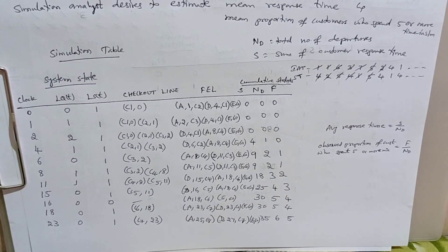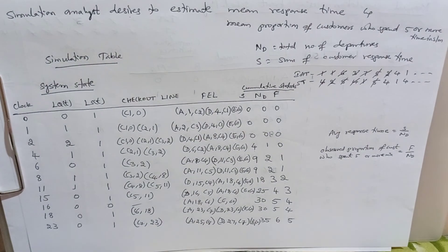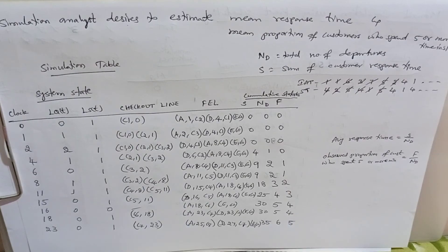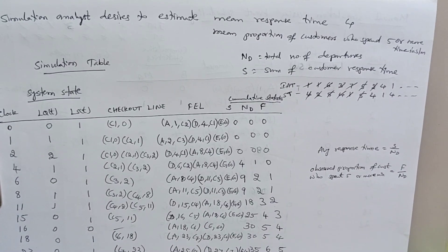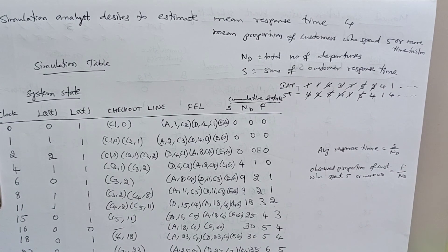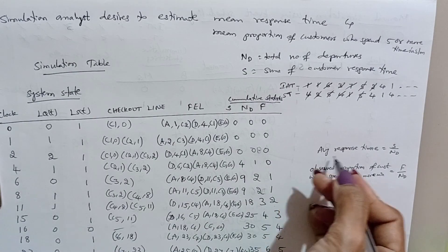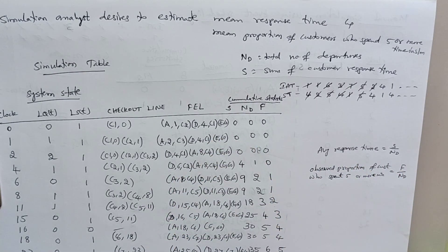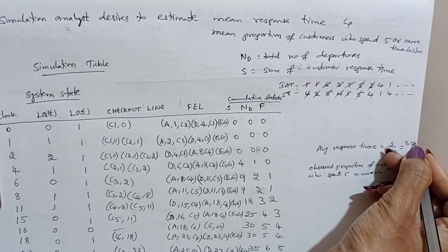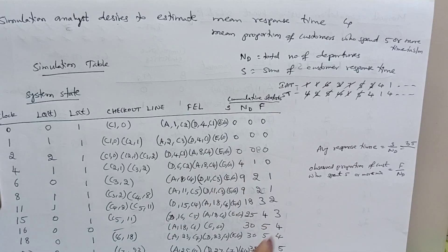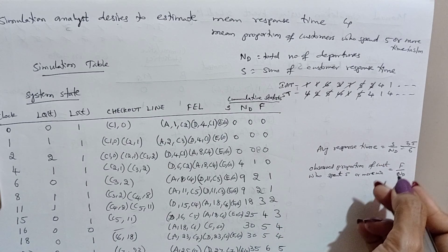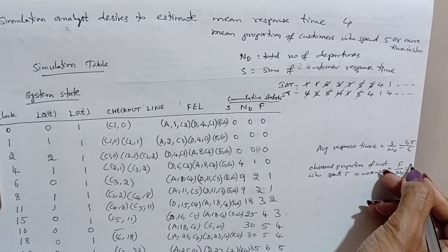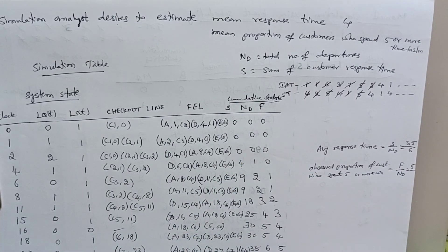The simulation table is now complete. We calculate the final values: average response time equals S divided by ND equals 35 divided by 6. Observed proportion of customers who spent 5 or more minutes equals F divided by ND equals 5 divided by 6. This is how to calculate the statistics from the simulation table.